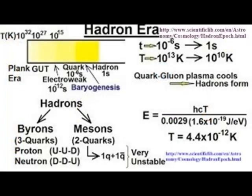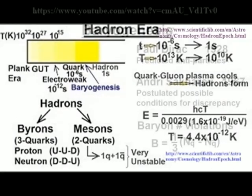The quark-gluon plasma that composes the universe cools until hadrons, including baryons such as protons and neutrons, can form. Initially, hadron-antihadron pairs could form, so matter and antimatter were in thermal equilibrium. However, as the temperature of the universe continued to fall, new hadron-antihadron pairs were no longer produced, and most of the newly formed hadrons and antihadrons annihilated each other, giving rise to pairs of high-energy photons. A comparatively small residue of hadrons remained at about one second of cosmic time, when this epoch ended.